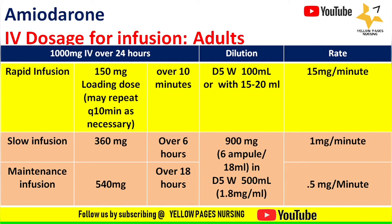For slow and maintenance infusion, 900 mg (6 ampoules or 18 ml) of amiodarone is diluted in D5W 500 ml, giving a concentration of 1.8 mg per ml. For slow infusion, 360 mg is given over 6 hours at 1 mg per minute, and for maintenance infusion, 540 mg is given over 18 hours at 0.5 mg per minute, altogether equaling 900 mg.